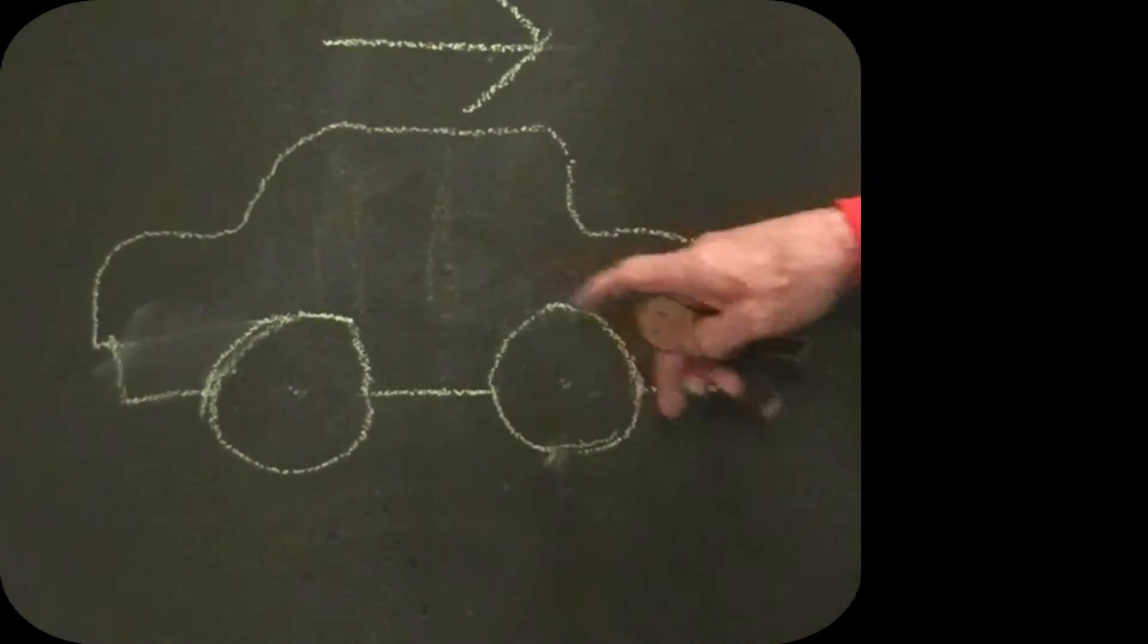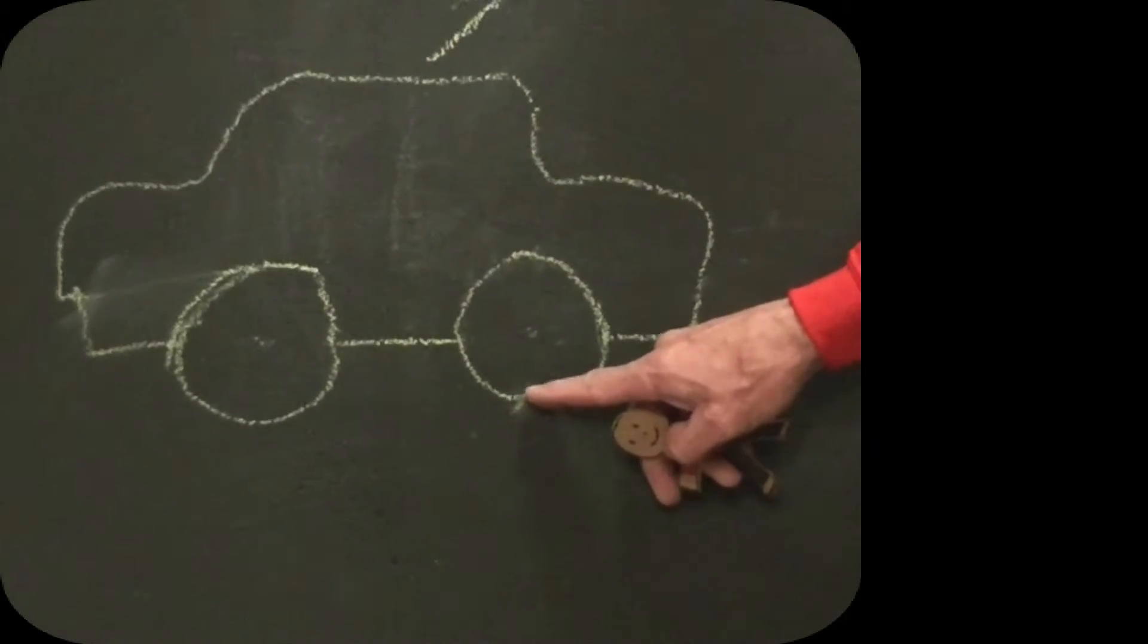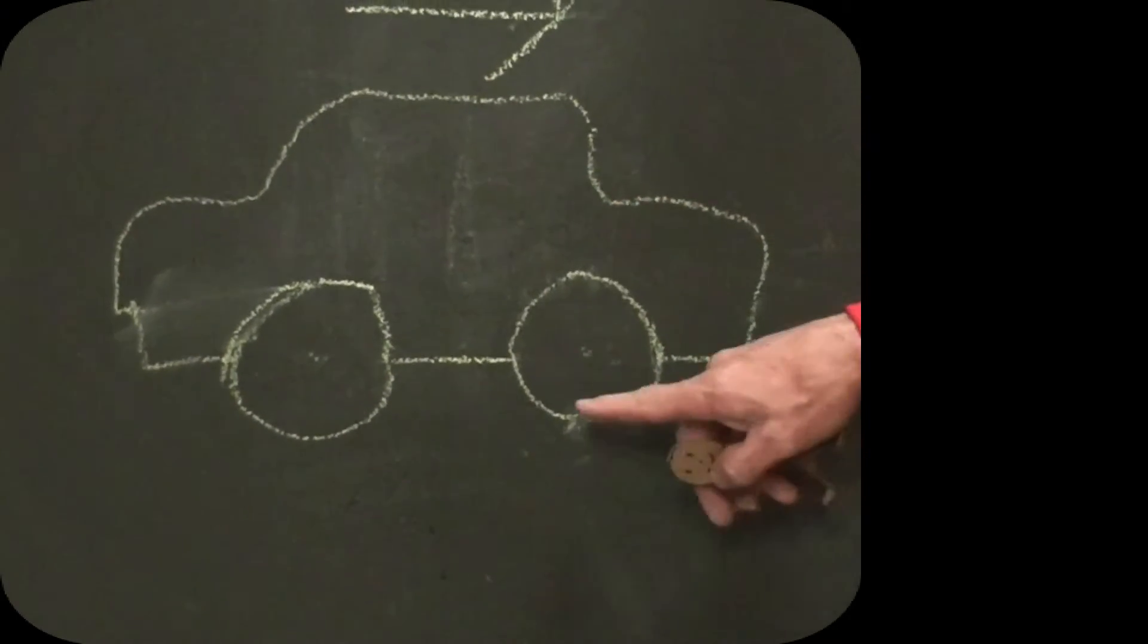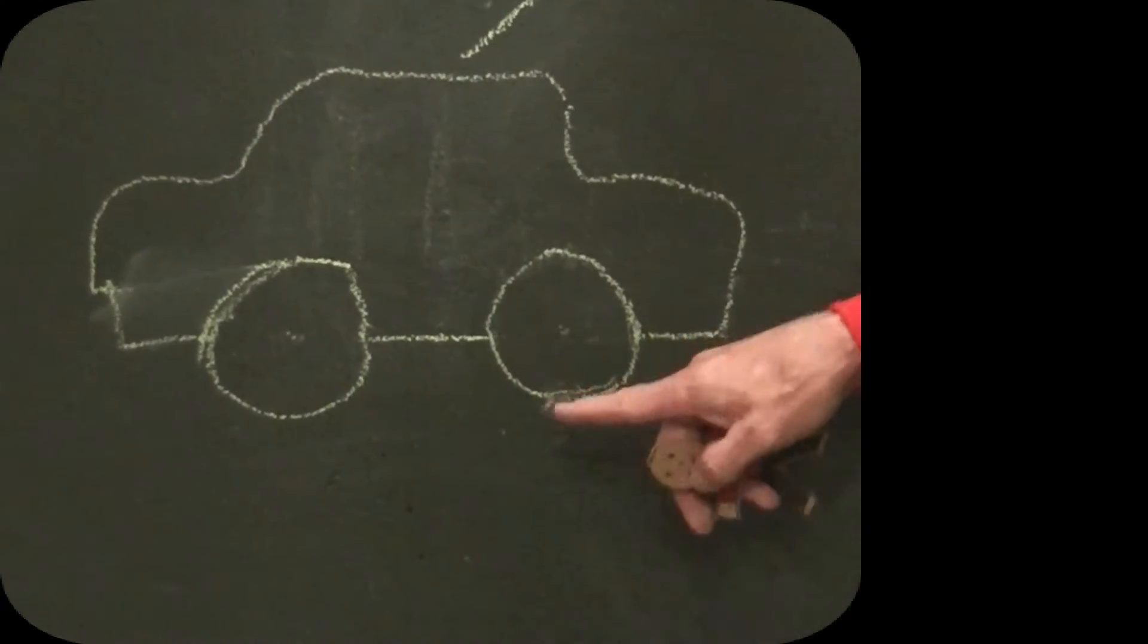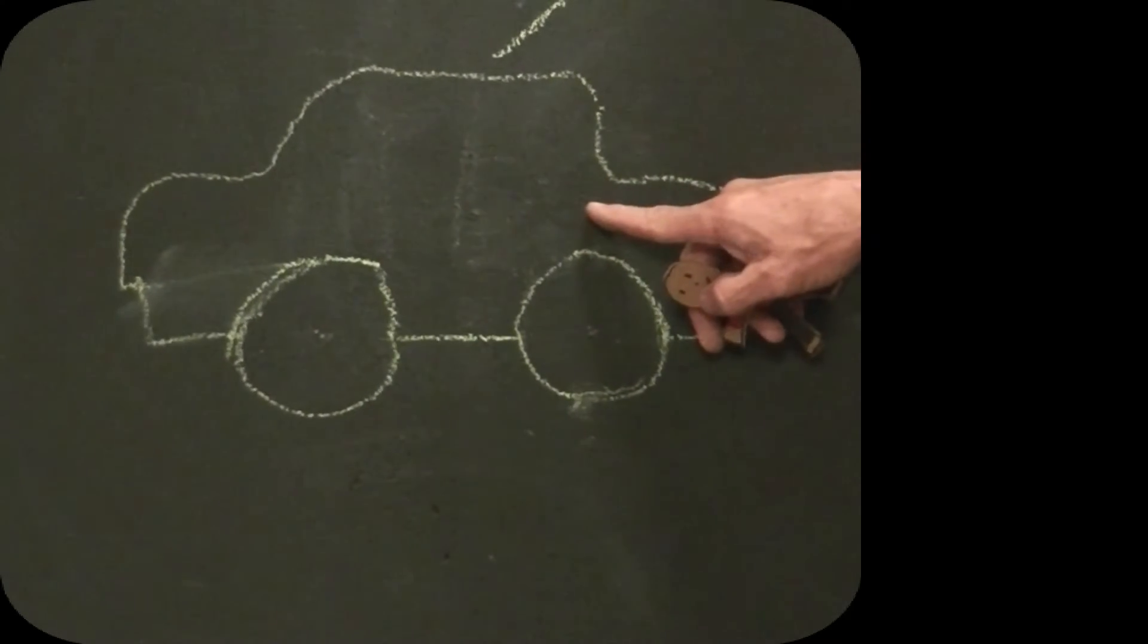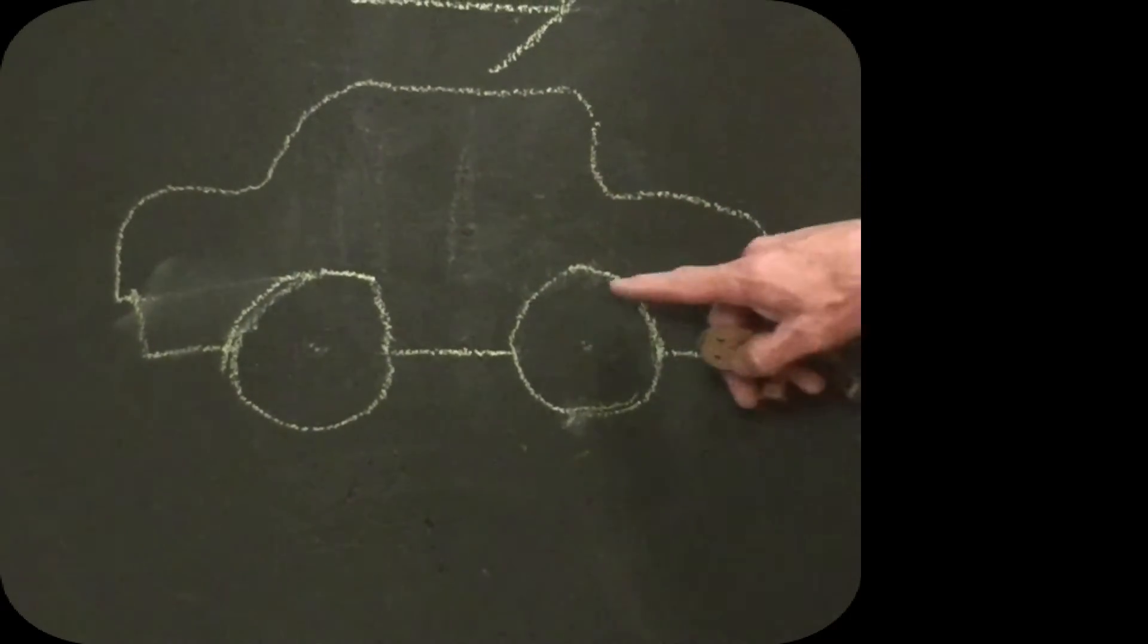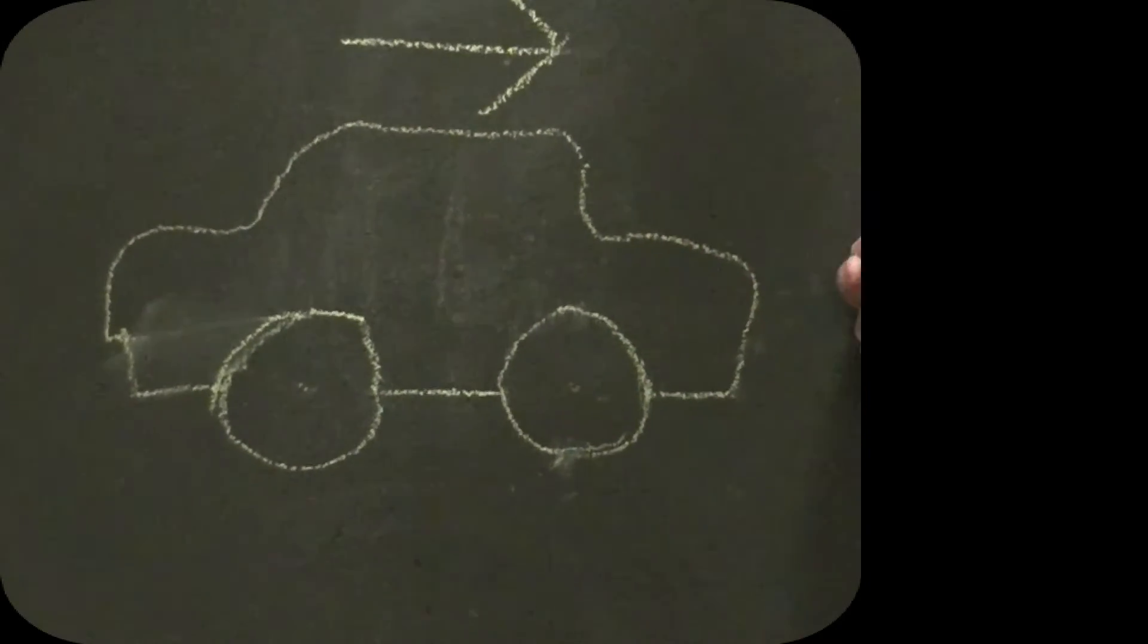Now relative to the car, what's the speed of the bottom part of the tire? It's 60 miles an hour because the car is passing the bottom part of that tire at 60 miles an hour. What's the speed of the top of the tire relative to the car? Again, 60 miles an hour because the top of the tire is passing the car going the other direction.